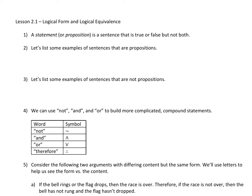Let's list a few examples of sentences that are propositions — sentences that are clearly either true or false. We can say 'it is sunny' or 'I like apples,' right? True or false. Some examples of sentences that are not propositions: it's hard to tell if they're true or false, or they're sometimes true and sometimes false. Mathematically, x squared plus 2 equals 11 is sometimes true and sometimes false, depending on the value of x.